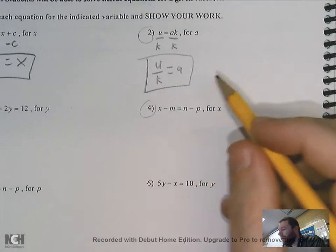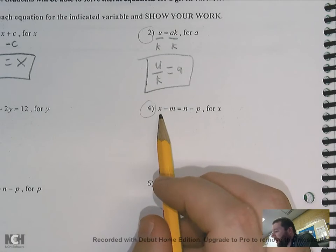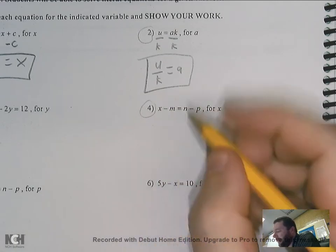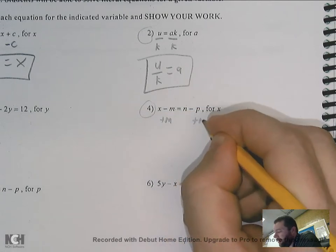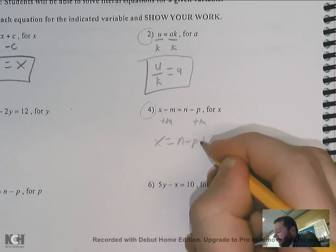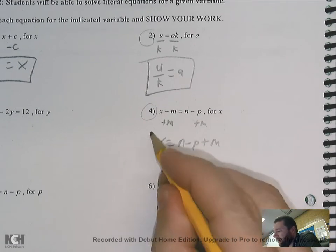This next one, number four, I have x minus m, and it wants me to solve for x. So I've got to get rid of that minus m. So I'd plus m to each side, which is going to give me x is equal to n minus b plus m. X is by itself. I'm done.